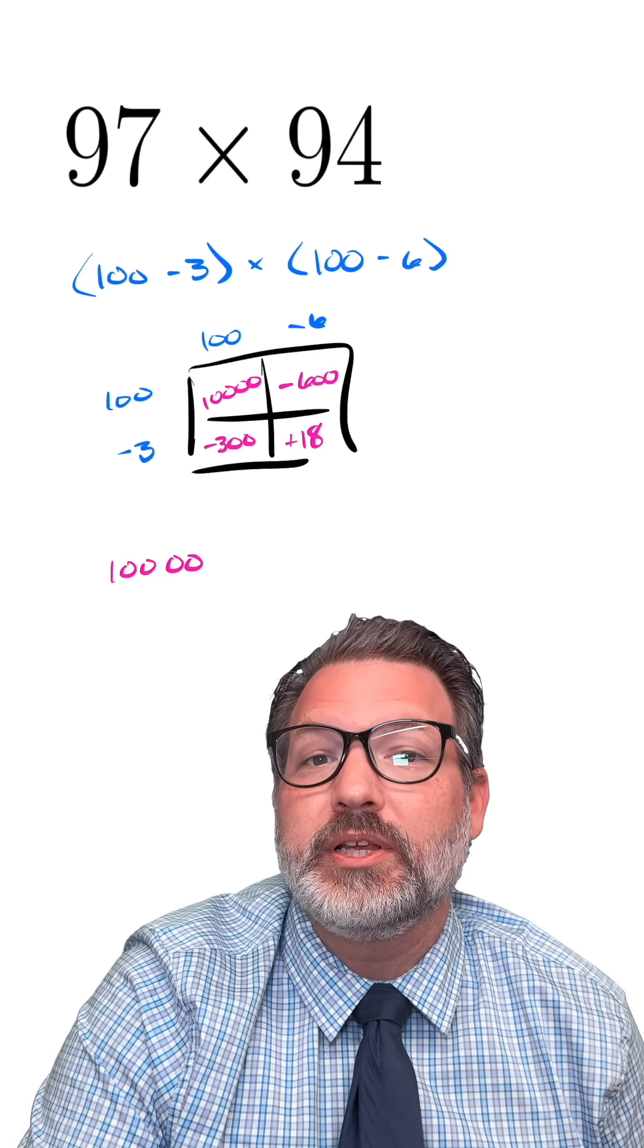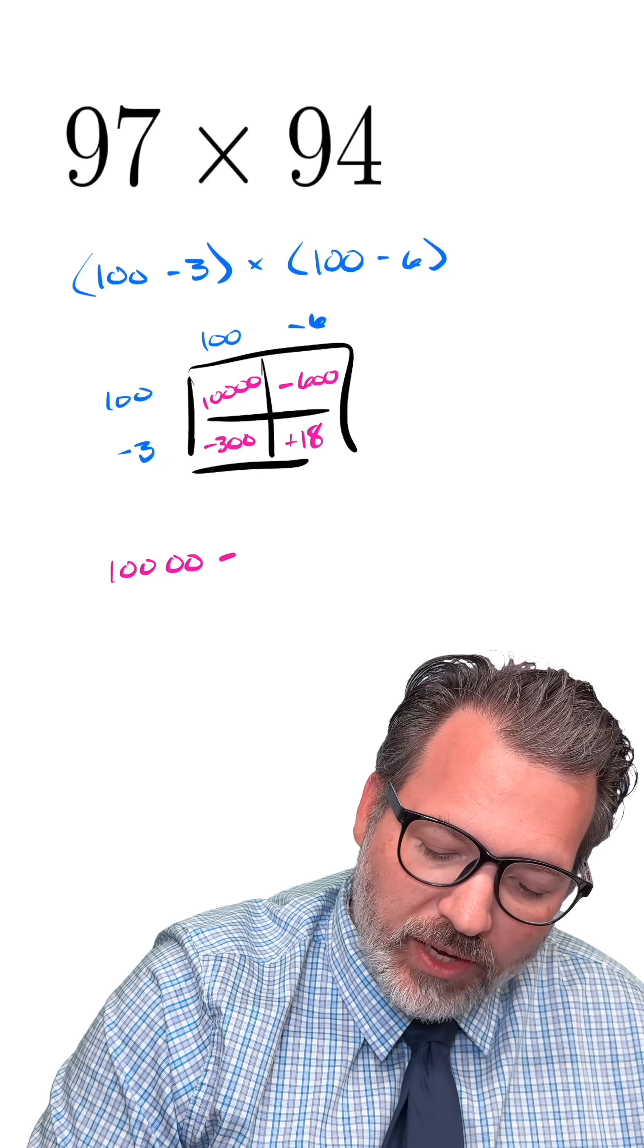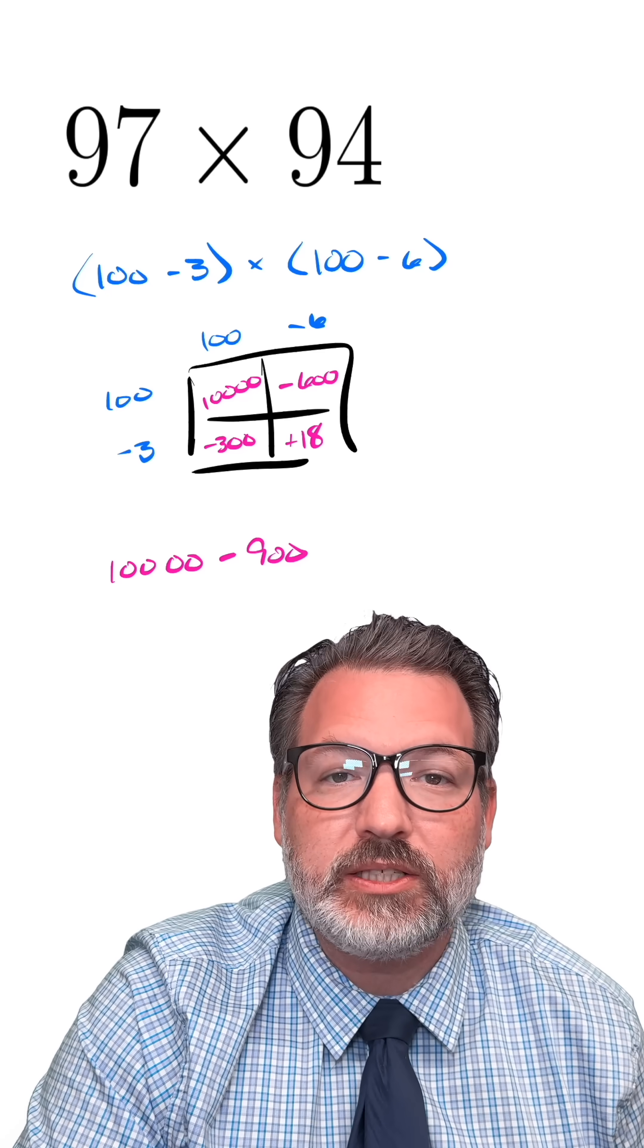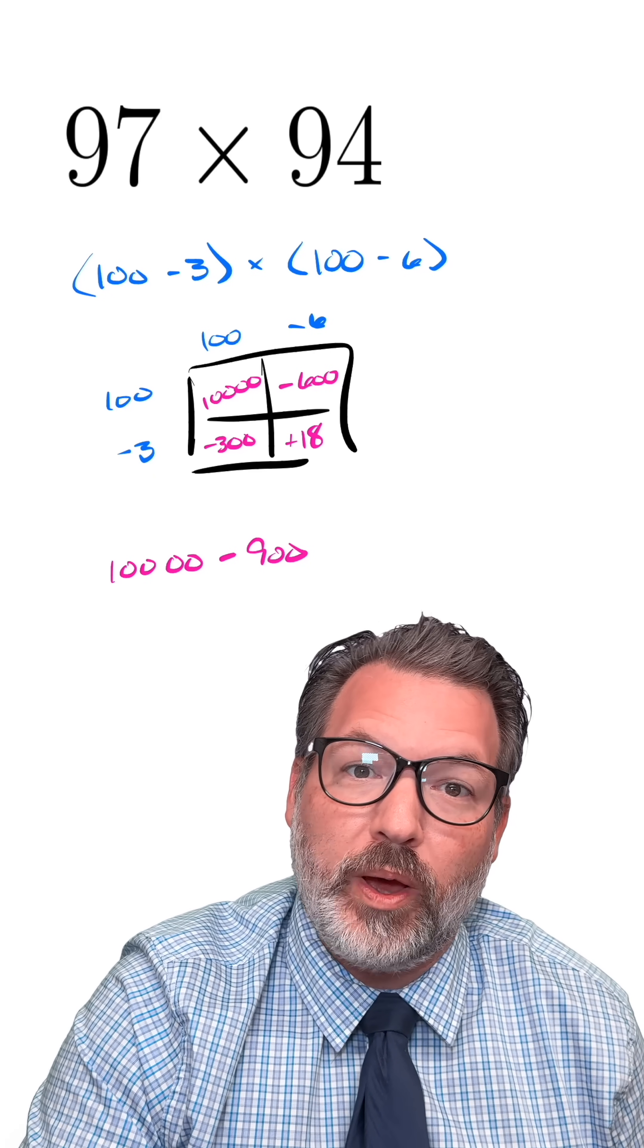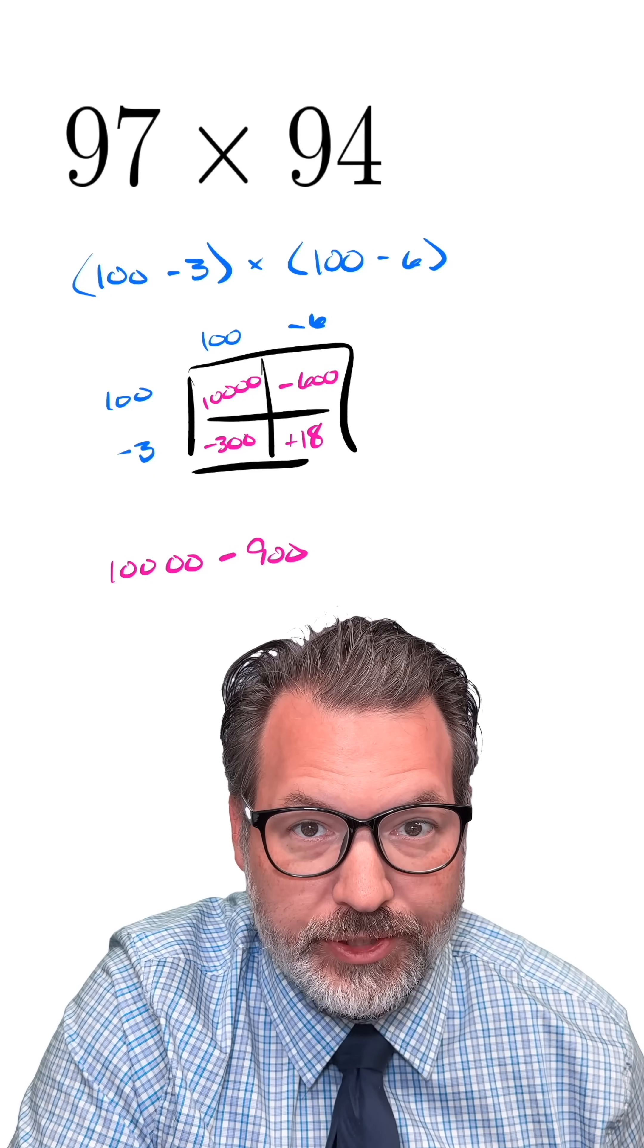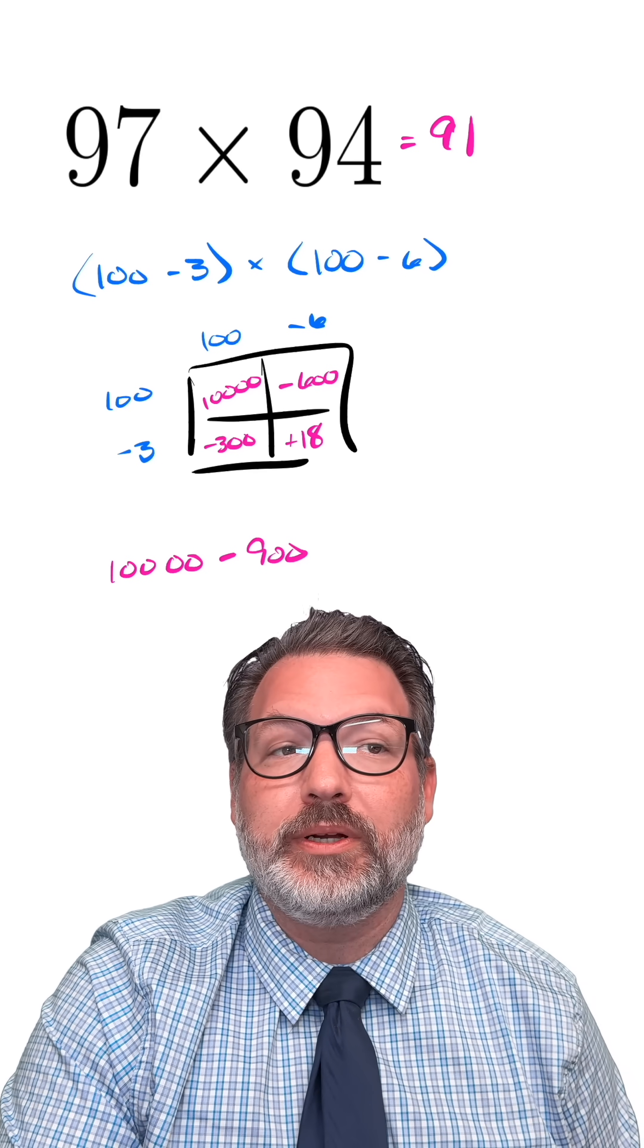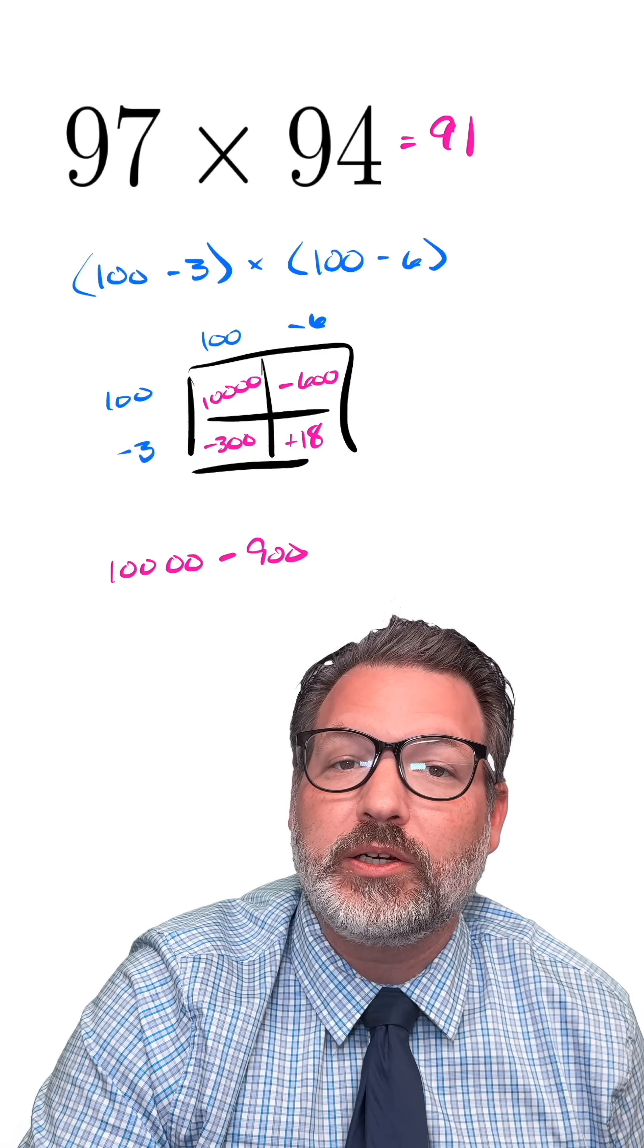We're multiplying two numbers that are just under 100. We've also got two sets of hundreds that we'll be subtracting away. In this case, the 600 and the 300, which when we subtract that 900 total from 10,000 gives us 9,100. That's where the 91 in our product was coming from.